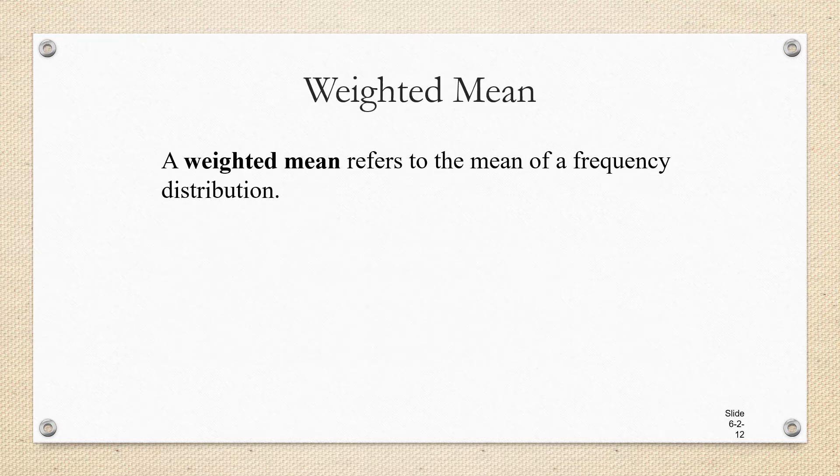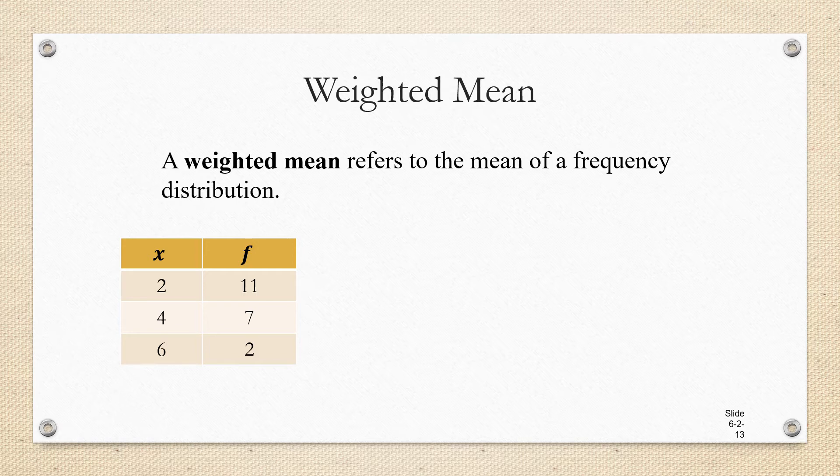So what is this thing called a weighted mean? A weighted mean just refers to the mean of a frequency distribution. Or another way of saying that is when the data is given to us in a frequency distribution, instead of being listed out data item by data item, how do we find the mean? How do we find the average? So one way would certainly be to just list out all the data. For example,